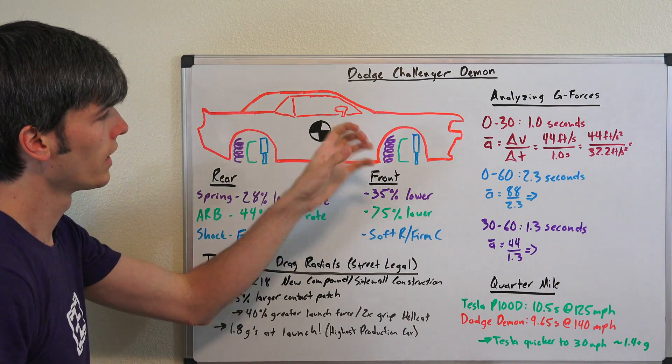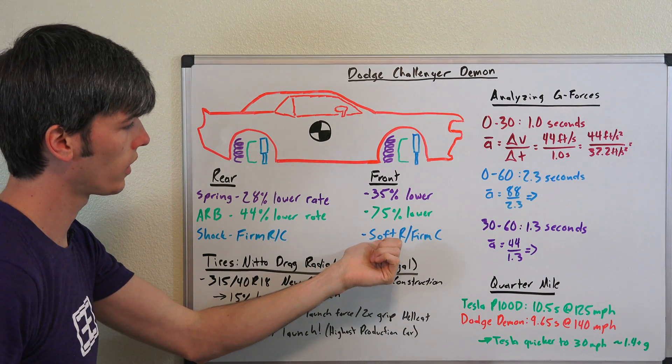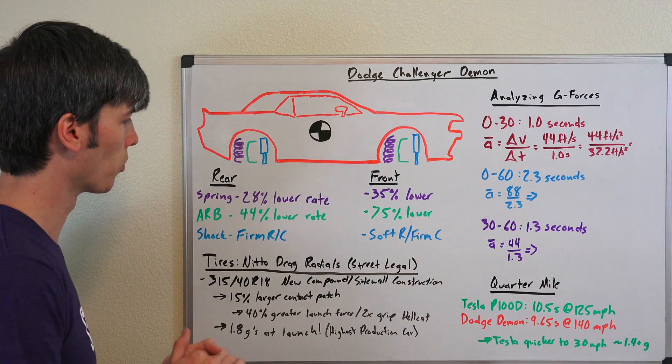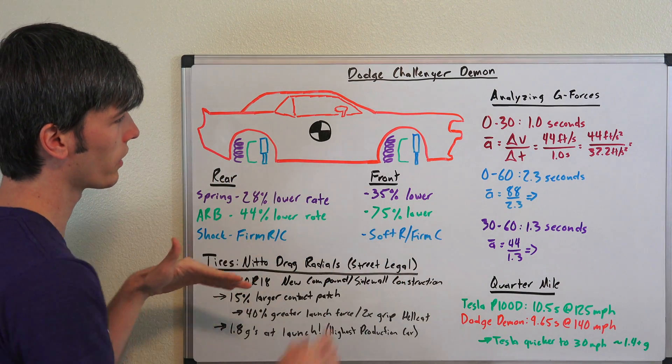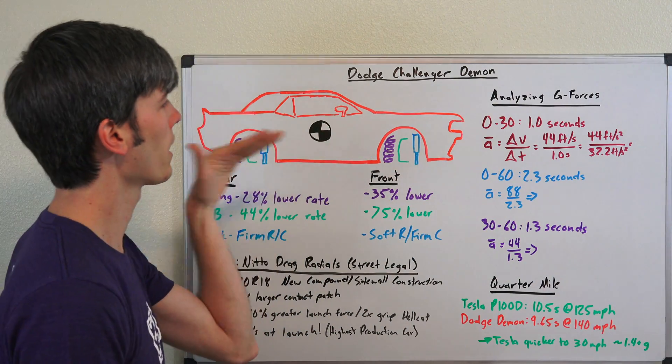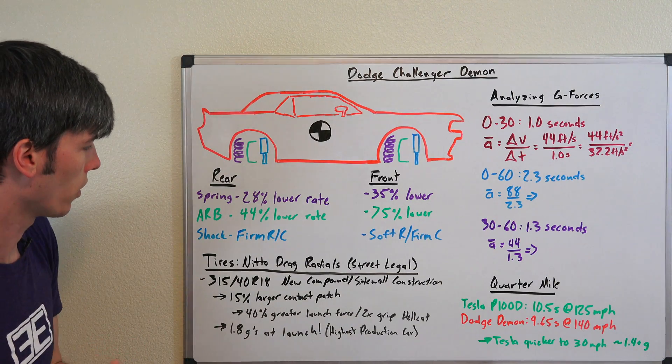Now once you come back down and you let off full throttle, they're actually going to stiffen up that front rebound so that the car is more stable. But while you're at full throttle, they're going to leave it soft so that you can have that vehicle tilt back, lean back and get all of that weight as much as possible onto those rear wheels.